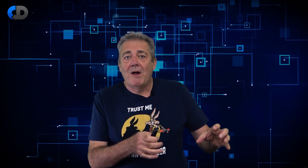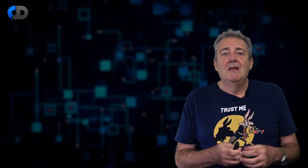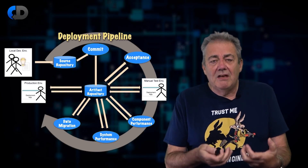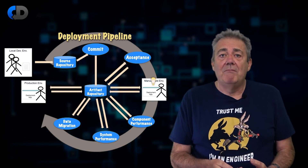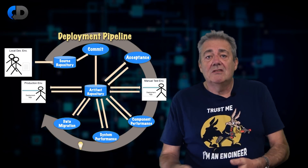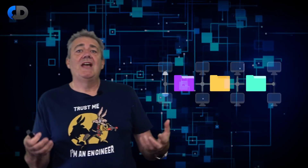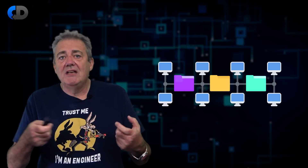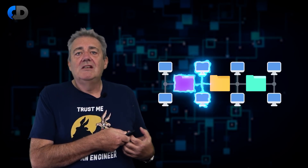My preferred approach to this part these days is event storming — there's a link in the description if you'd like to learn more about that. But we also need to write code, live with it for a while, and see how it works out as our understanding of the problem and of the system deepens. Only then will we know if our design works to insulate our services from change. During this phase, I want to minimise the overhead of changes. As soon as any of my services live in a separate repo, there's a significant overhead involved.